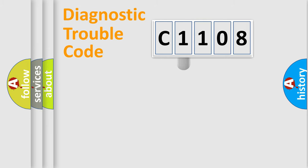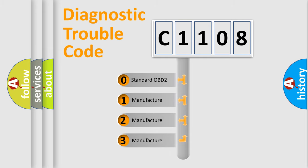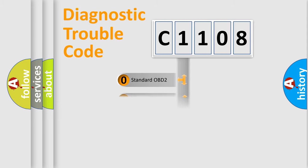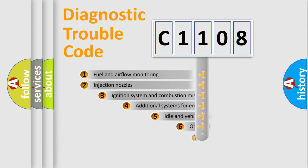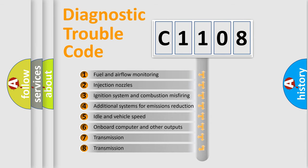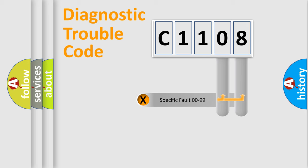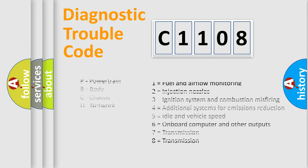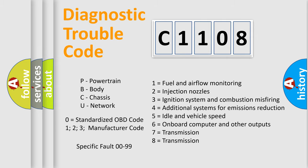This distribution is defined in the first character of the code. If the second character is expressed as zero, it is a standardized error. In the case of numbers one, two, or three, it is a more specific manufacturer-defined error. The third character specifies a subset of errors. Only the last two characters define the specific fault of the group. Note that such a division is valid only if the second character is expressed by the number zero.